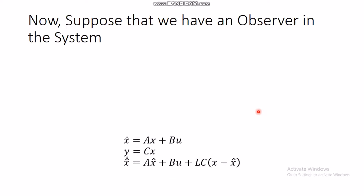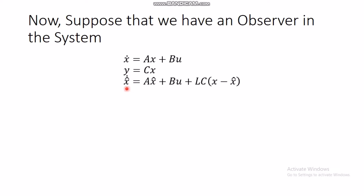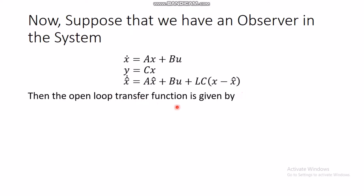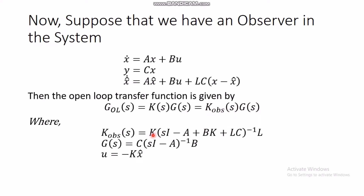Now suppose we also have an observer. The system is x-dot = Ax + Bu, y = Cx, with a Luenberger observer: x-hat-dot = Ax-hat + Bu + L·C(x - x-hat). The plant transfer function G(s) = C(sI-A)⁻¹B remains the same. The observer-based controller transfer function K_observer(s) is given by K·(sI - A + BK + LC)⁻¹·L, where K is the controller gain and L is the observer gain. The control law becomes u = -K·x-hat.